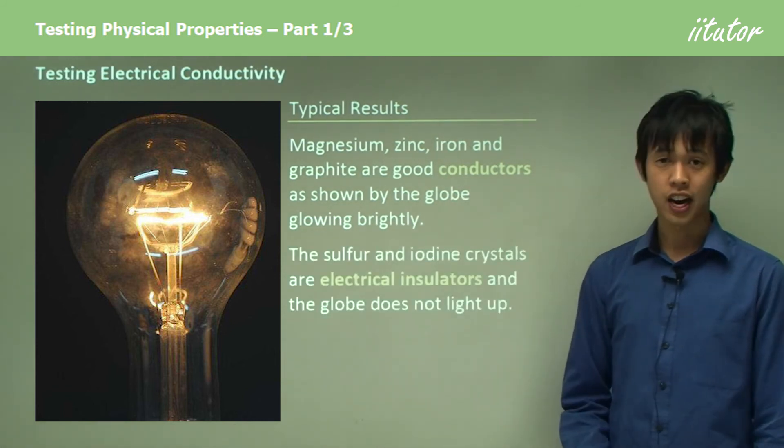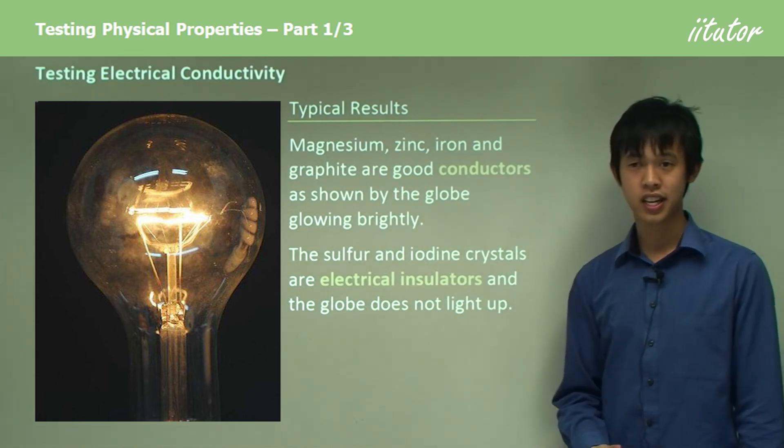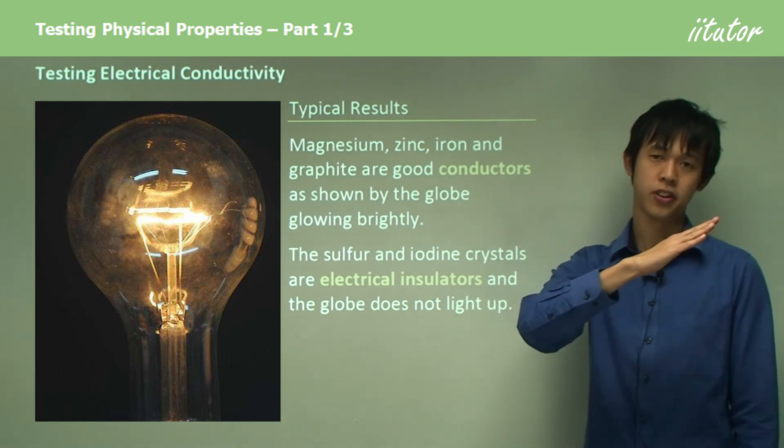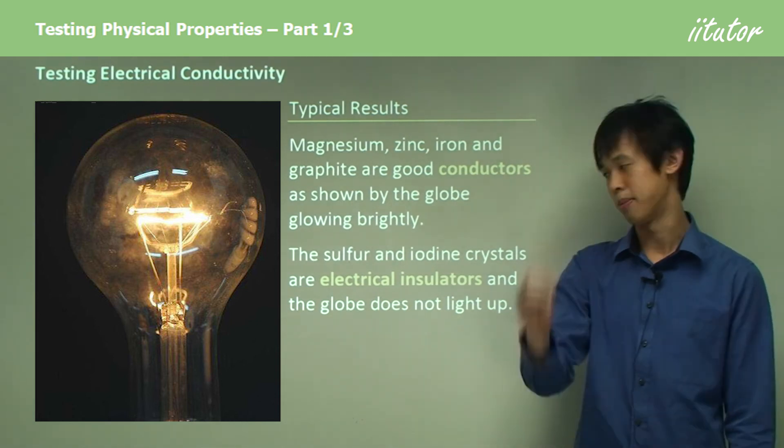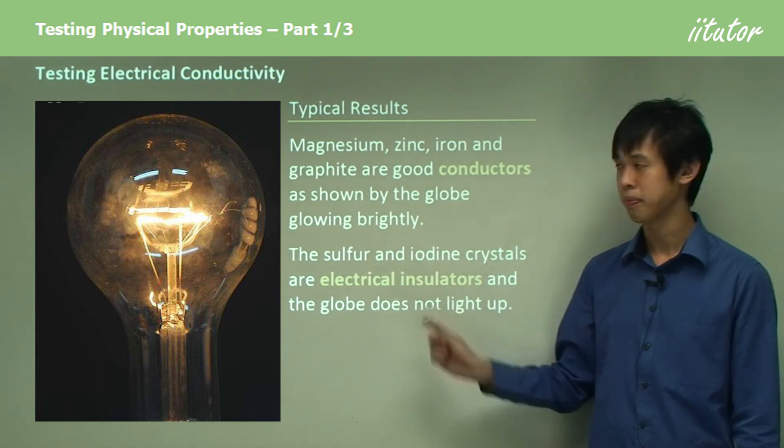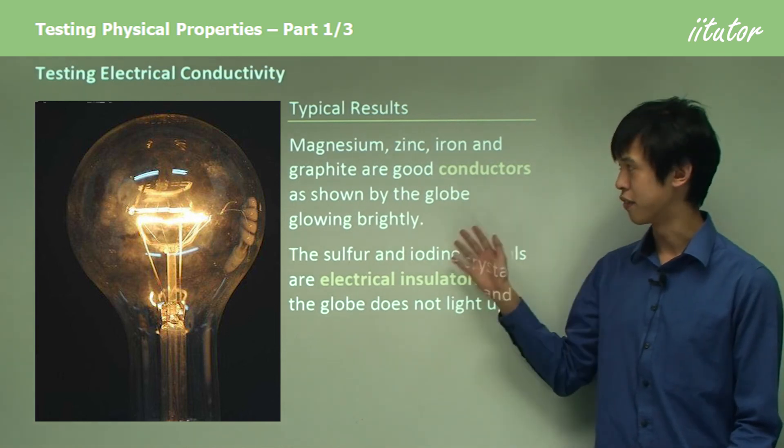The sulfur and iodine are nonmetals, so they're electrical insulators in crystal form. The globe won't light up and the ammeter will read zero. It'll be zip on the ammeter if you're using sulfur or iodine.